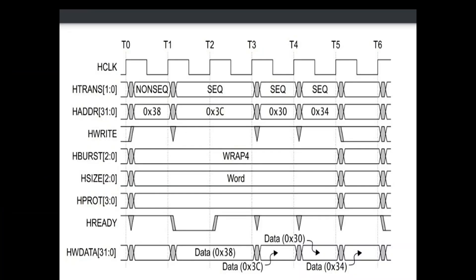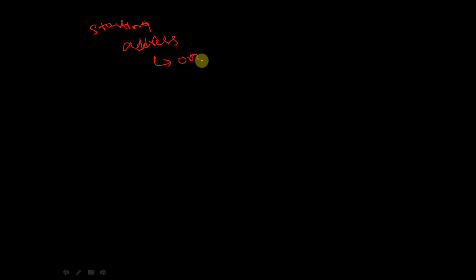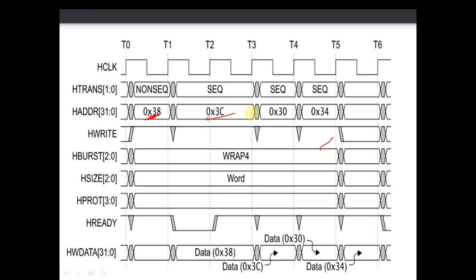Now let's see how we calculate the wrap address in AHB. The starting address is 0x38, that is hexadecimal 38. In our example, the starting address is 0x38, followed by 0x3C, 0x30, 0x34. So how are we getting this address wrapped?